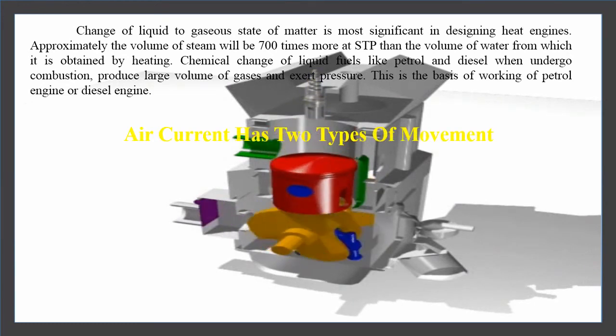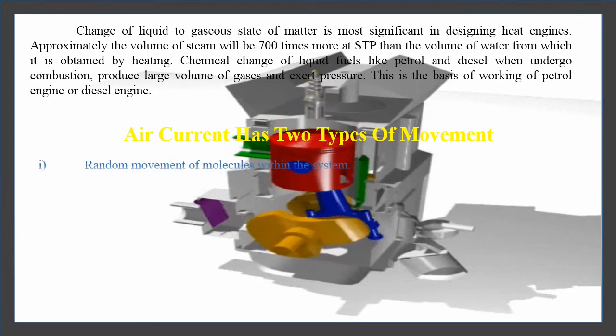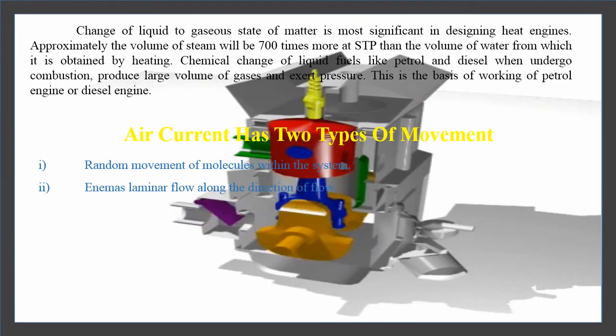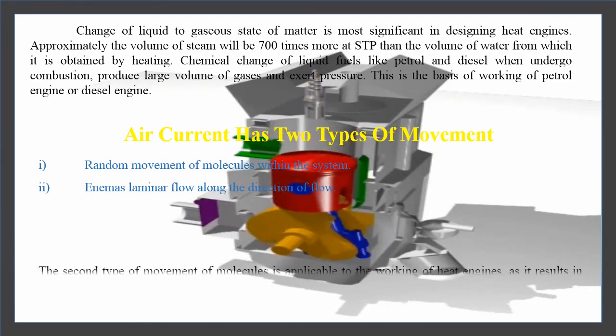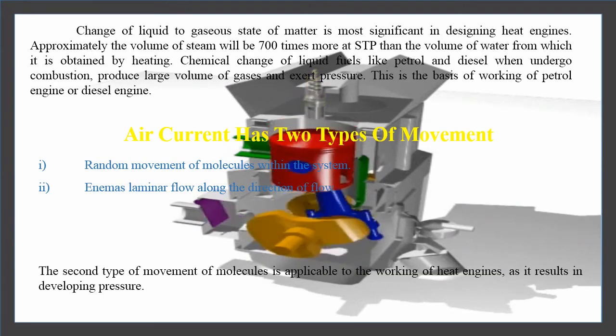Air current has two types of movement. First one is random movement of molecules within the system, and the second one is en masse laminar flow along the direction of flow. The second type of movement of molecules is applicable to the working of heat engines as it results in developing pressure.